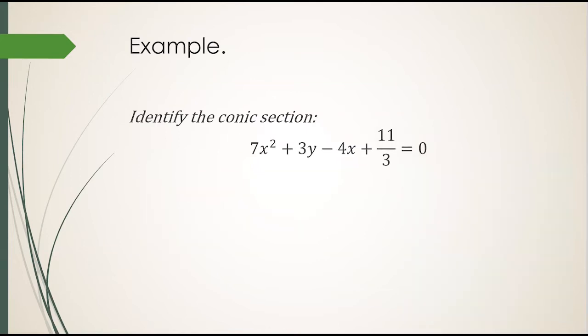Next example. Identify the conic section 7x squared plus 3y minus 4x plus 11 thirds equals 0. All the variables are already on one side, so I don't need to move anything. Only x is squared, y is not. So it's a parabola with an axis along the y direction, so it's vertical. Here it is on Desmos.